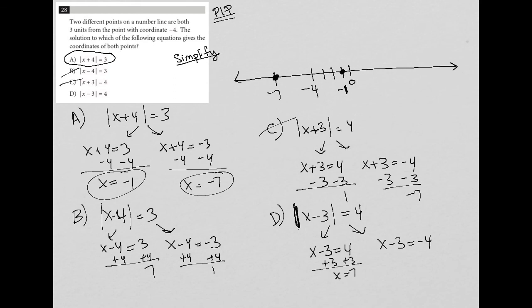I get X equals seven. And when I add three to both sides here, I get X equals negative one. But what I want is negative one and negative seven. So that's why D is gone.